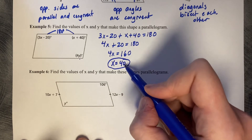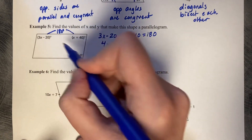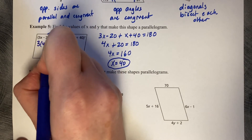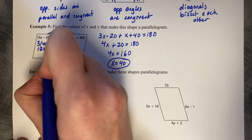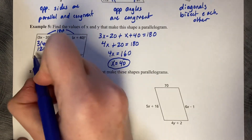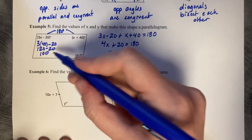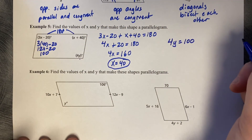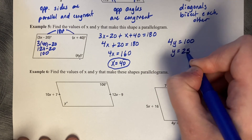Now that x equals 40, use opposite angles to be congruent. 3 times 40 minus 20 equals 120 minus 20 equals 100. So 4y equals 100; divide by 4 and y equals 25.